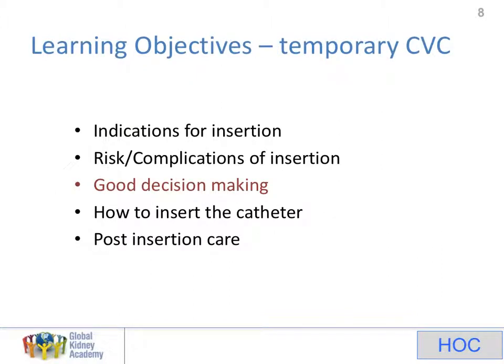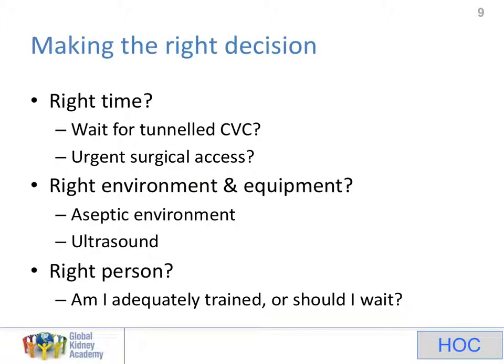So let's look at decision making. I want to cover a number of things that should be passing through your mind each time you approach a patient. The first is: is this the right moment to insert the catheter? That may seem an obvious question, but sometimes it is possible to wait. Say the patient has got a potassium which is slightly high — you could manage that medically and insert a tunnel catheter the next day. Or the patient may be suitable for urgent surgical access. The second decision is: is this the right environment? And what can I do to change this environment to make it better? With that, what equipment have I got available? Do I have ultrasound now? If not, could I get ultrasound? Is ultrasound available if we wait until tomorrow?